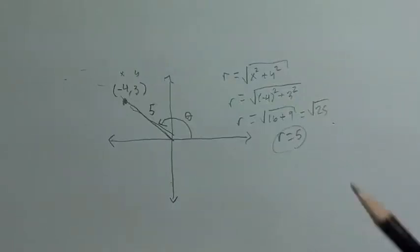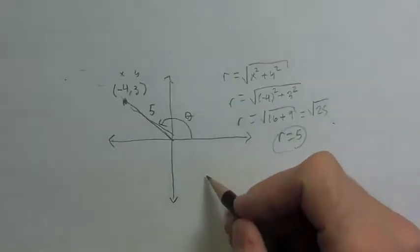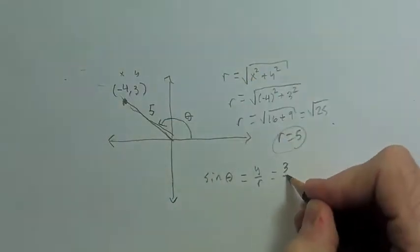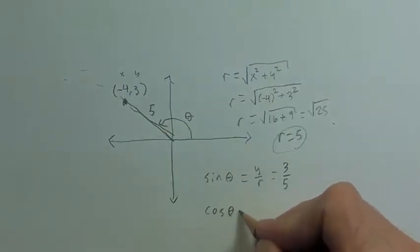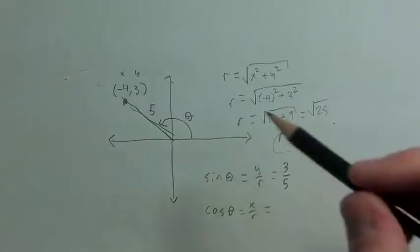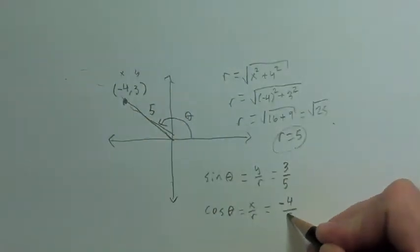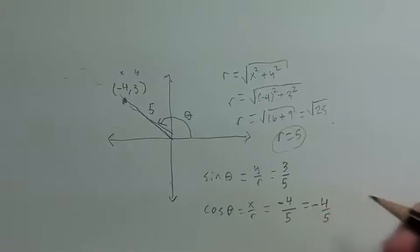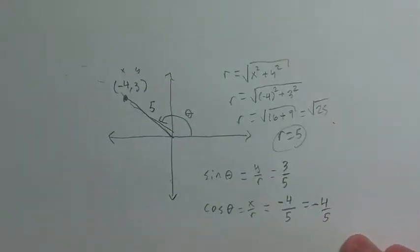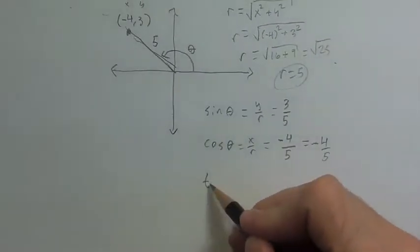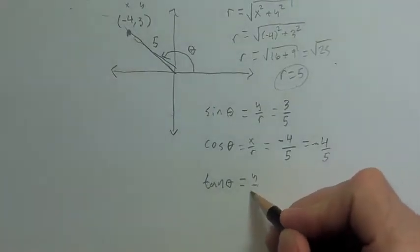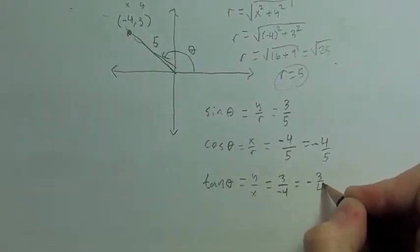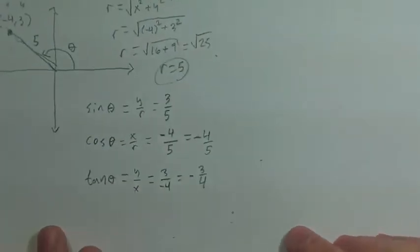From here we can find sine theta: sine theta is y over r, so y is three, r is five — sine theta equals three-fifths. Cosine theta is x over r. Here x is negative, so make sure you incorporate the negative — it'll be negative four-fifths. And tangent, which we don't actually need r for, is y over x — that's three over negative four, or negative three-fourths.